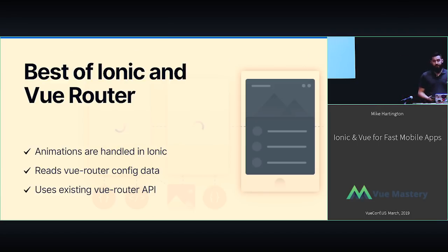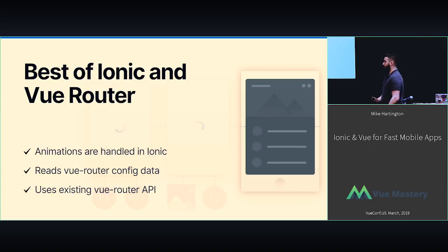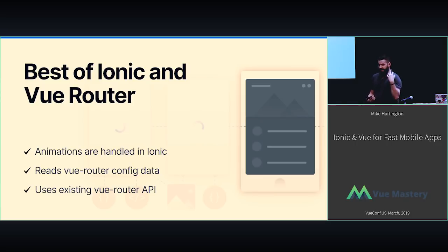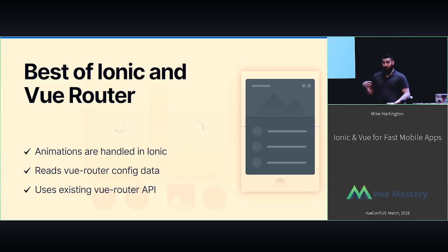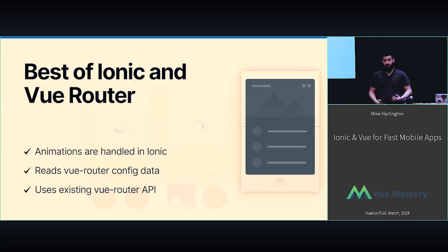This brings the best of Vue and Ionic together. Our animations are handled internally, so you don't have to wire that logic up yourself — it's already provided. The Vue Router config is already there; you're not having to rebuild your routing to fit a different approach. It just works. And when it comes to navigating throughout your app, you're still using Vue Router APIs, with access to route params and that API available. We're not overriding everything — we're just augmenting Vue Router to enhance it.